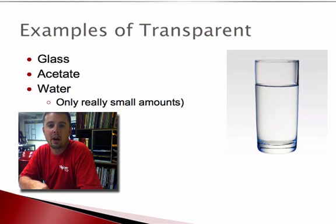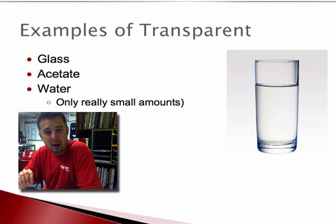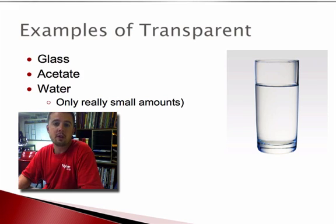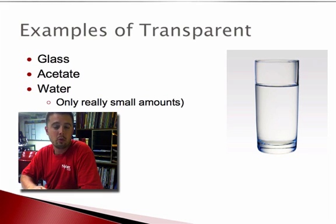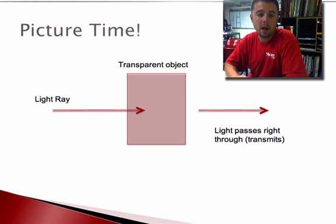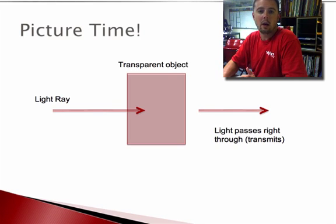Examples of things that are transparent are glass or acetate. Depending on the amount, water could also be considered transparent — a very small amount of water might qualify, but larger amounts would not. What happens with a transparent object is that light rays pass right through, or transmit right through, the object.